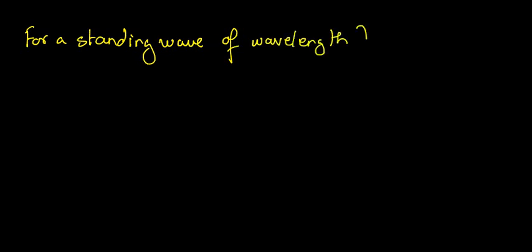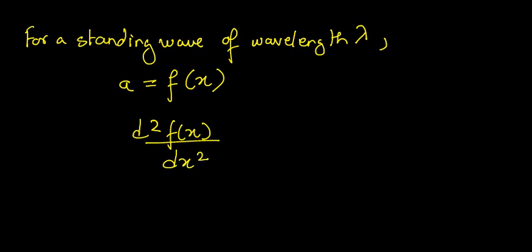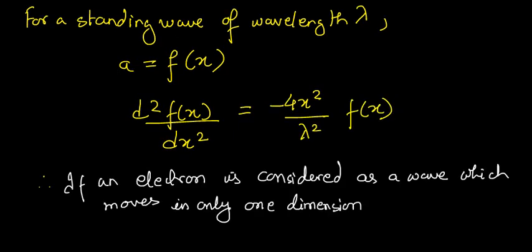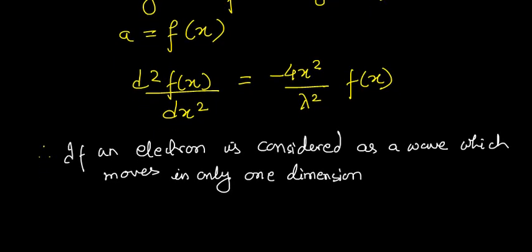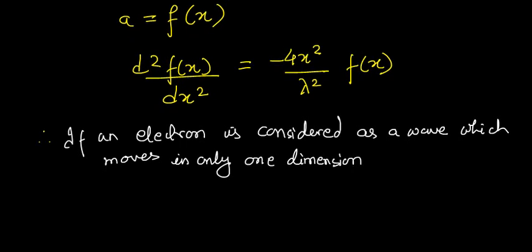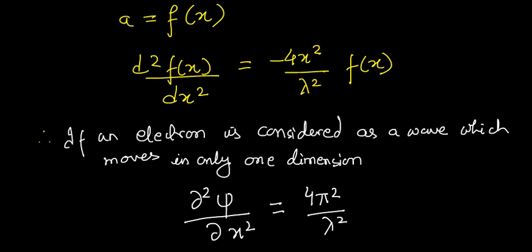Let us assume that for a standing wave of wavelength lambda, whose amplitude we denote as A, at any point along the x-direction may be described as a function f(x). It can be shown that d²f(x)/dx² equals minus 4π² by lambda squared, whole into f(x). If an electron is considered as a wave moving only in one dimension, then d²ψ/dx² equals minus 4π² by lambda squared into ψ.